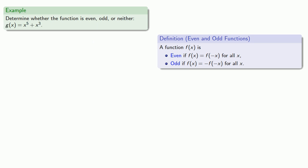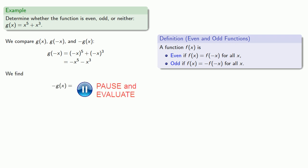Or how about this function? We'll compare g of x, g of negative x, and negative g of x. So we'll find g of negative x and simplify. And this is not g of x, so we'll find negative g of x and simplify. And we see that g of negative x and negative g of x are the same thing, and so g of negative x equals negative g of x, and g is odd.